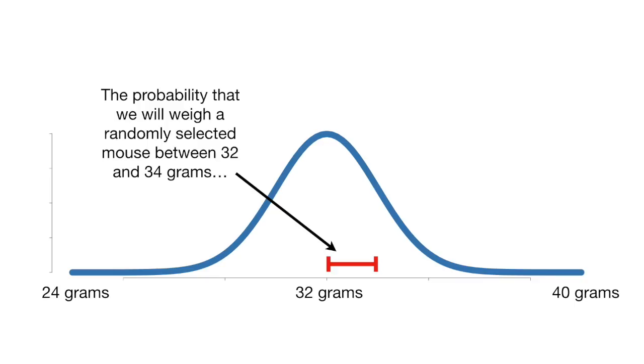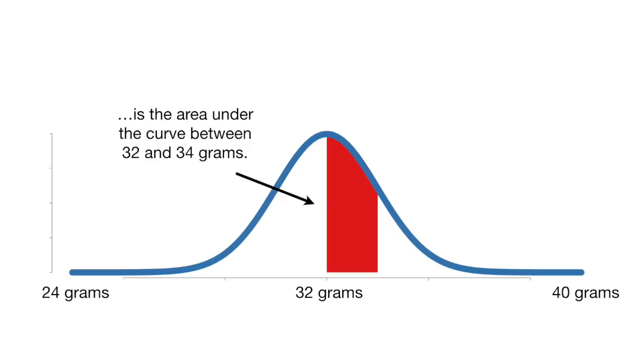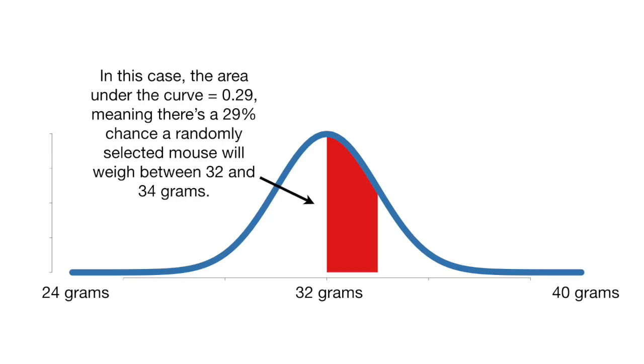The probability that we will weigh a randomly selected mouse between 32 and 34 grams is the area under the curve between 32 and 34 grams. In this case, the area under the curve equals 0.29, meaning there's a 29% chance a randomly selected mouse will weigh between 32 and 34 grams.